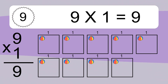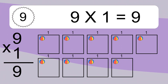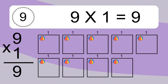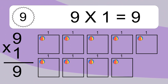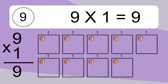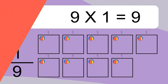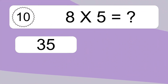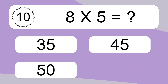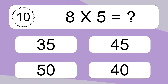We have 9 boxes, and each box has 1 colorful ball inside. If you count all the balls in all the boxes together, you will have 9 times 1 balls. This equals 9 balls. 8 times 5 equals what?